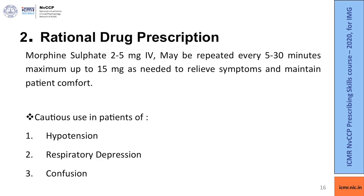The next drug to administer is morphine sulfate 2 to 5 mg IV, which may be repeated every 5 to 30 minutes up to a maximum of 15 mg. It should be used cautiously in patients with hypotension, respiratory depression, and confusion.